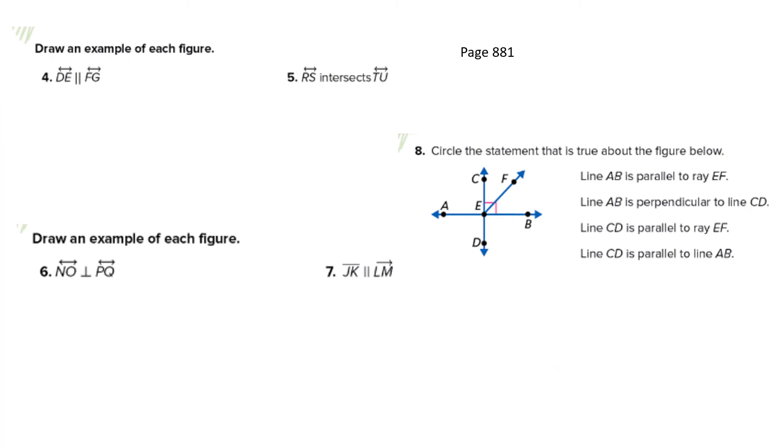Let's move on. Now for four and five, six, and seven, you are to draw examples of each of these. Remember in number four that that symbol means parallel, and in number six this means perpendicular. And then for number eight, all you need to do is circle the true statement. So stop your video, complete the rest of 881. And when you're done, then start the video again.